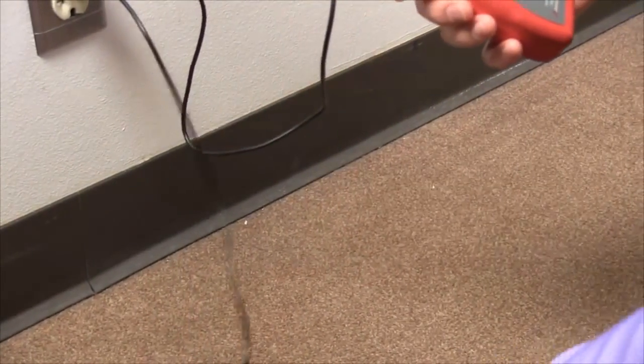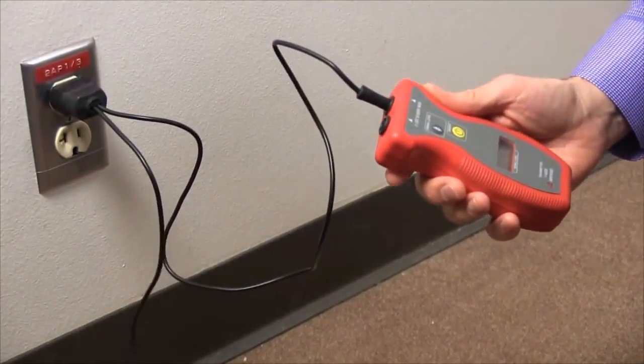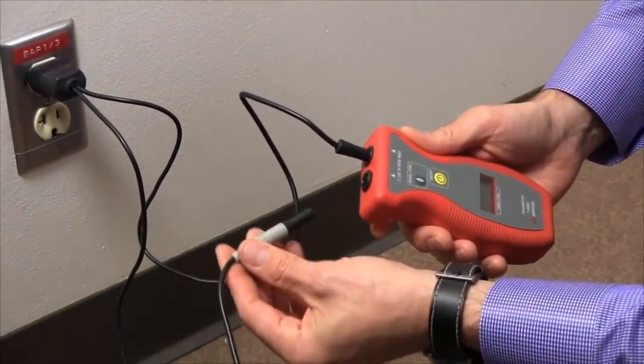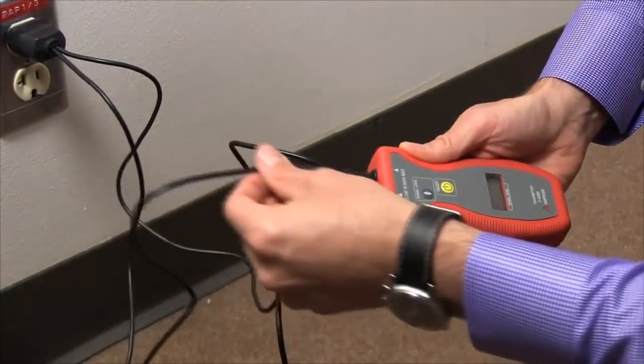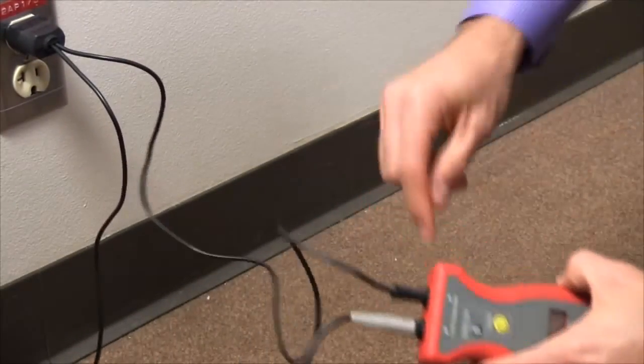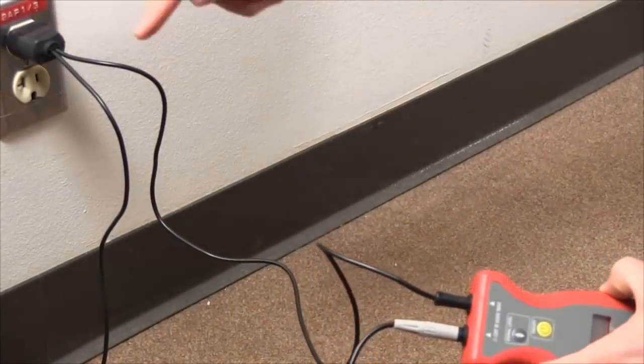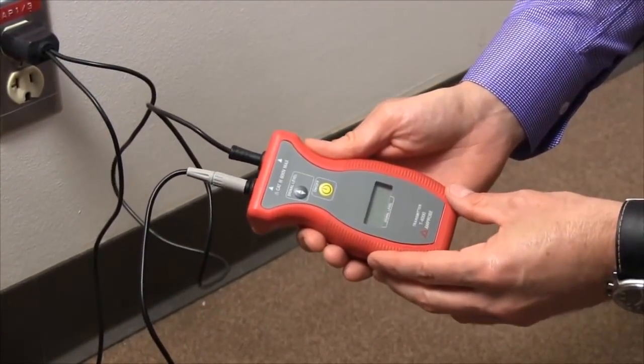Instead of using this other wire to input into the unit, we will use the grounding plug. This is important because if you were to plug both of these into the transmitter, the signal would cancel each other out and you would get no reception. I'll demonstrate how that happens later.